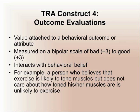The complement to the behavioral belief is the outcome evaluation. The outcome evaluation is very similar to the outcome expectancy discussed in social cognitive theory — it is the value attached to a behavioral outcome or attribute. For example, a person who believes exercise is likely to tone muscles, but does not care about how toned his or her muscles are, is unlikely to exercise. Examples include: I don't care about losing weight; I don't care about avoiding HIV. These represent the value placed on an outcome.